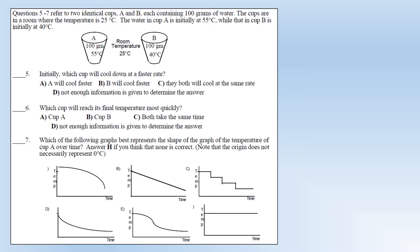Changing to a different scenario: two identical cups, both with 100 grams of water, room temperature is 25 degrees. The first cup is at 55 degrees, the second cup is at 40 degrees. Which cup will cool down at a faster rate initially? The answer is cup A. The rate at which heat energy transfers between two things depends on their temperature difference, so cup A has a bigger temperature difference to the surroundings and will initially transfer heat at a faster rate.